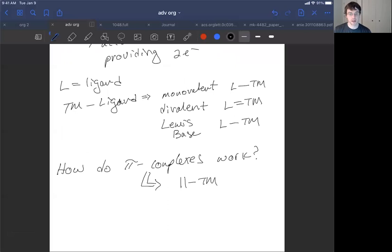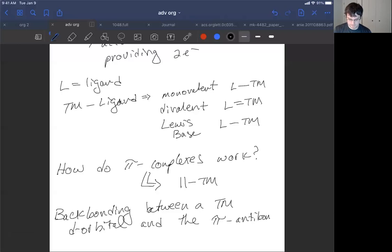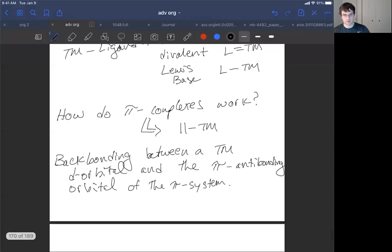So what we can do is we can show backbonding between a transition metal d orbital and the pi antibonding orbital. So this is the answer to the question, how do pi complexes work? Backbonding between a transition metal d orbital and the pi antibonding orbital from a pi system.